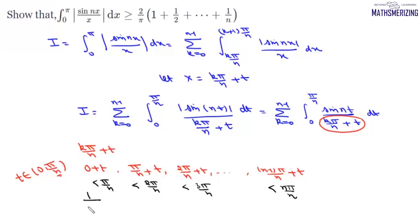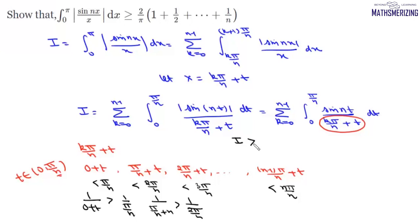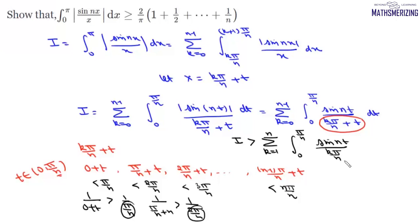Taking reciprocals: 1/(0+t) > 1/(π/n), and 1/(π/n + t) > 1/(2π/n). From this, we can write the integral I is greater than the summation k varies from 1 to n of the integral from 0 to π/n of sin(nt) / (kπ/n) dt.